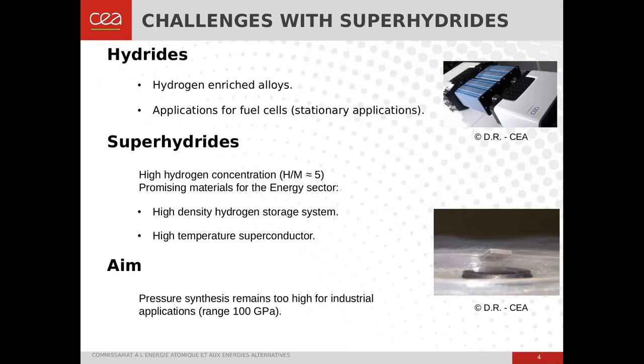Despite the fact that spectacular hydrogen concentration has been reached, the synthesis pressure required is too high — in the range of 1 million times the atmospheric pressure. With such extreme pressure, it is unimaginable to have industrial applications. That's why a big challenge is to find ways to reduce this pressure, and a preliminary step is to improve our knowledge about superhydrides.